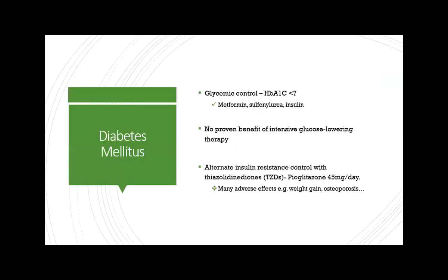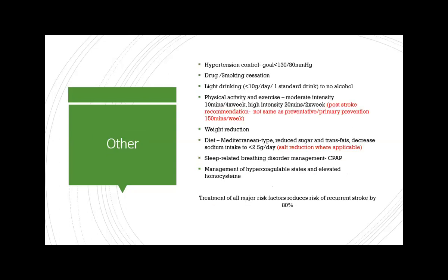For diabetes management, the goal is an HbA1c of less than 7%. Glitazones can be used if the patient has resistance to other agents. Hypertension should be controlled. Smoking cessation and light or no alcohol intake are advised. Exercise recommendations are reduced for stroke patients due to debilitation — 10 minutes four times a week or 20 minutes twice a week, less than primary prevention targets. A Mediterranean diet and weight reduction are also advised, as is CPAP for those with OSA. Management of other hypercoagulable states is also important. Together, all these measures can reduce stroke risk by up to 80%.